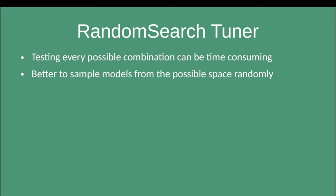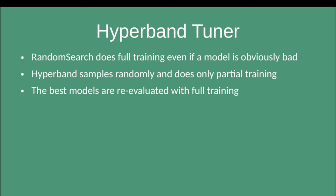One of them is the random search tuner. The idea is to randomly sample from the possible space, and you define how the sampling works during tuning. The tuner then searches, based on the sampling decision, for the best model it can find. The drawback of this random search tuner is that each sampled combination will be trained for the whole defined training range — for instance, if you define 100 epochs, random search trains each configuration for 100 epochs.